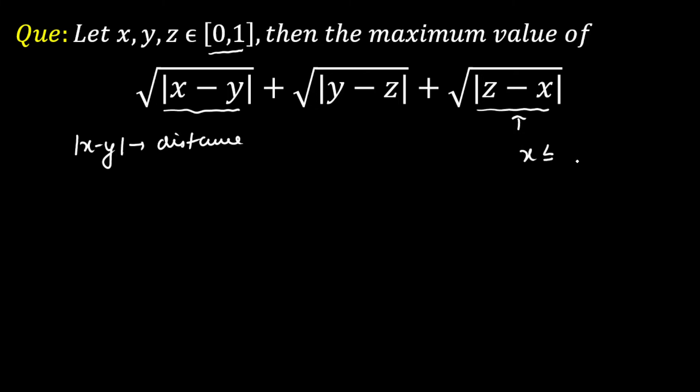So let's assume x is less than or equal to y is less than or equal to z. So here what we're going to do, if mod of x minus y represents a distance, I'm going to make this term as the maximum. If you want to make this third term as maximum, you're going to take this as 0 and you're going to take this as maximum 1.